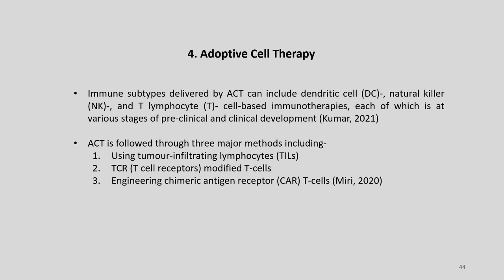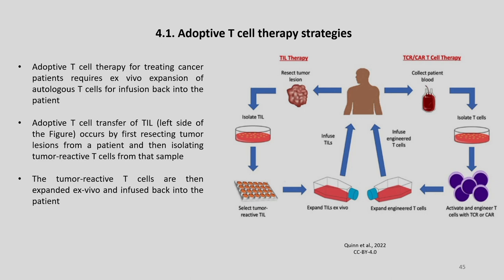Adoptive cell therapies follow three major methods: one using tumor-infiltrating lymphocytes (TILs), T cell receptor-modified T cells, and engineering chimeric antigen receptor T cells (CAR-T). Here in this diagram we can see the various adoptive T cell therapy strategies.